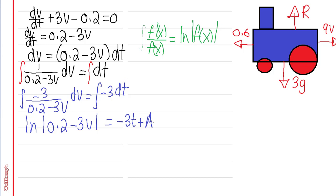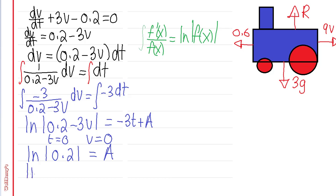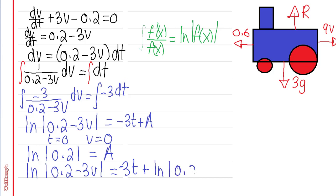To find the particular solution, we need to find A. The question says the truck starts from rest, so when t = 0, v = 0. Substituting these values gives ln(0.2) equals A. Substituting A back into the general solution gives ln|0.2 minus 3V| equals minus 3t plus ln(0.2).